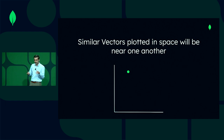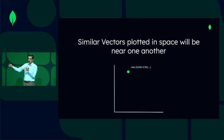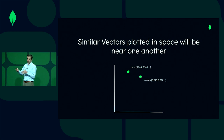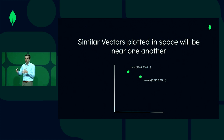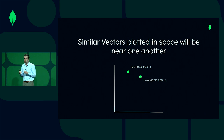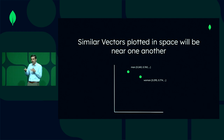Continuing on with the example: imagine you have a point that represents 'man' with a vector associated with it. You could also have another point that represents the word 'woman,' and it would be conceivable that those two pieces of text, when vectorized or embedded, would find themselves near one another. They would be close together in this high-dimensional space because they are semantically similar — they have similar meanings, they're both people or humans. This is a core concept that allows us to provide the service of vector search.